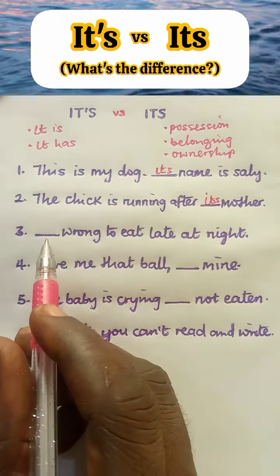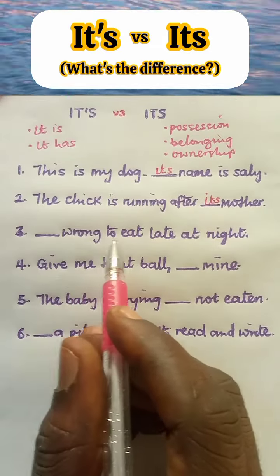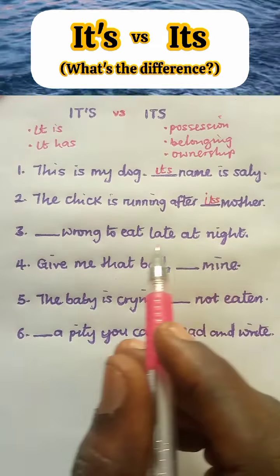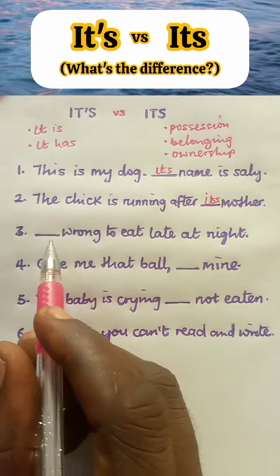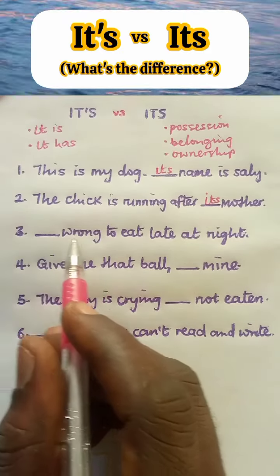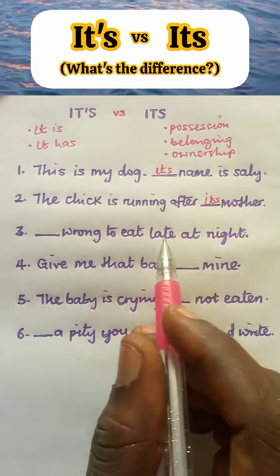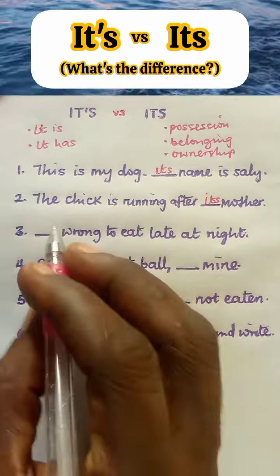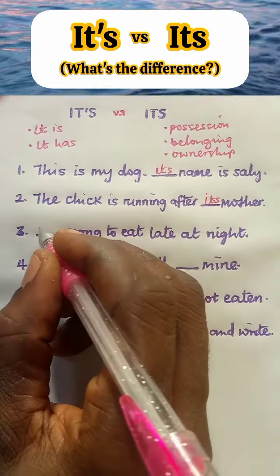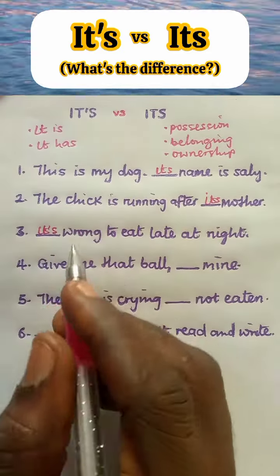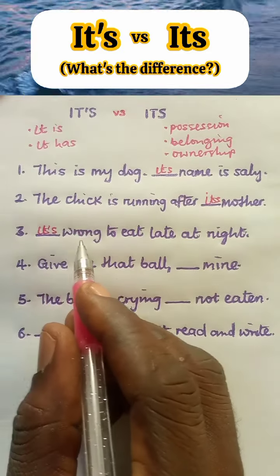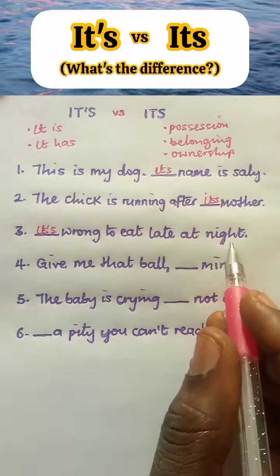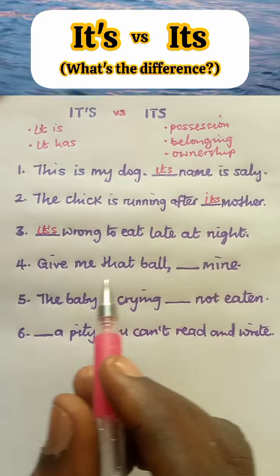Number three: '[Blank] wrong to eat late at night.' Let us try it out. 'It is wrong to eat late at night' — it makes sense. It simply means 'it's' with apostrophe is the right word: 'It's wrong to eat late at night.'